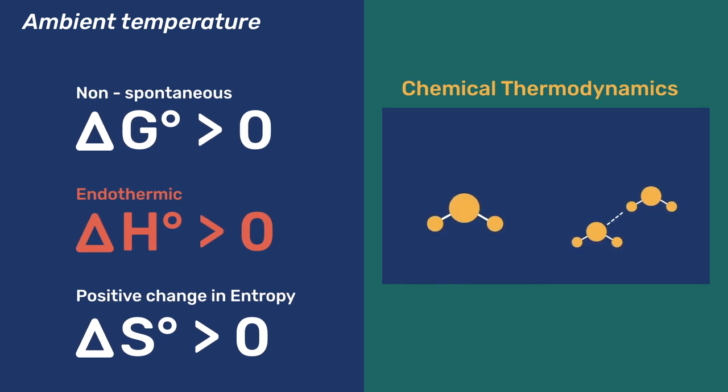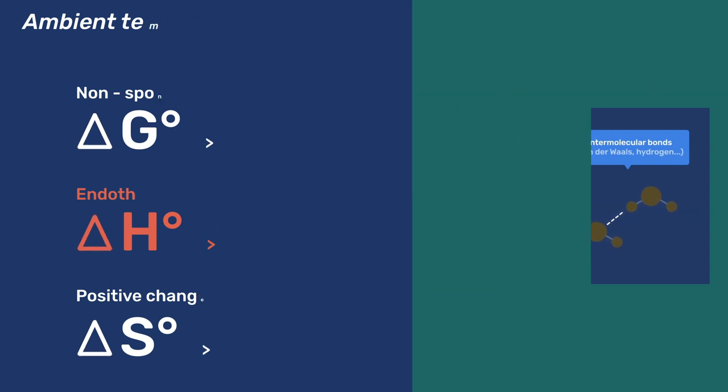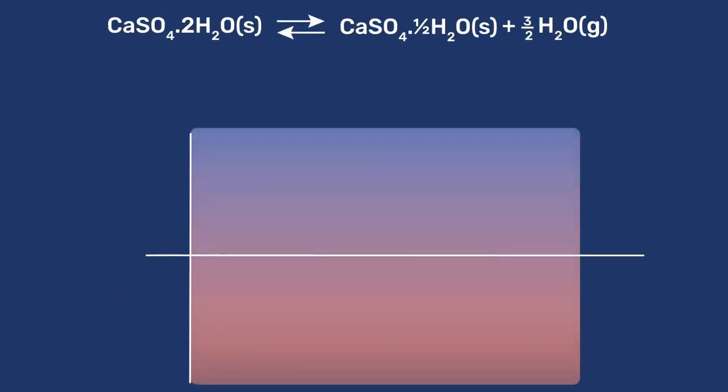Quantitative predictions can be reached by considering how the reaction-free energy changes with temperature. For this, let us plot delta G versus temperature. Positive values represent non-spontaneous processes, while negative values are for spontaneous ones.